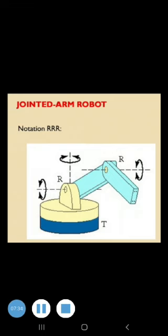This robot manipulator has the general configuration of the human arm. The jointed arm consists of a vertical column that swivels about the base using a T joint. At the top of the column is a shoulder joint whose output link connects to an elbow joint.